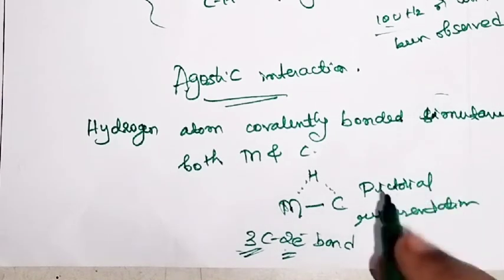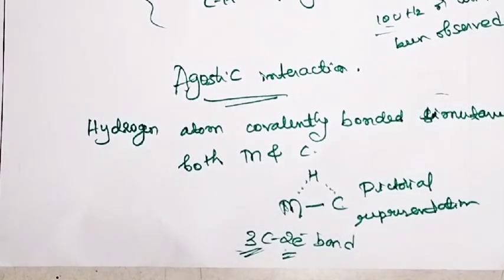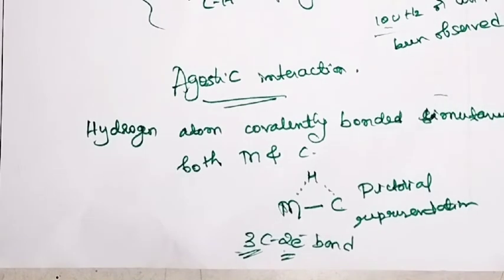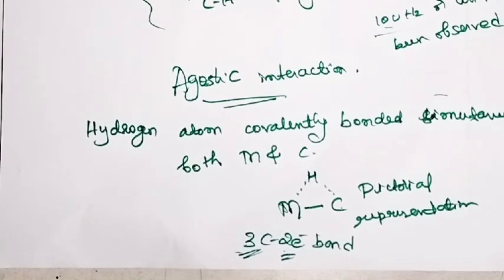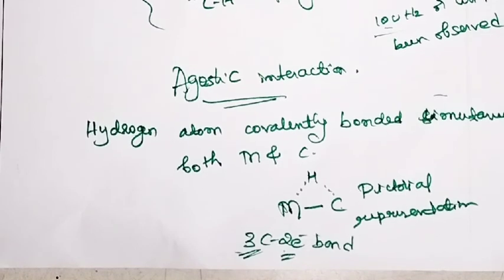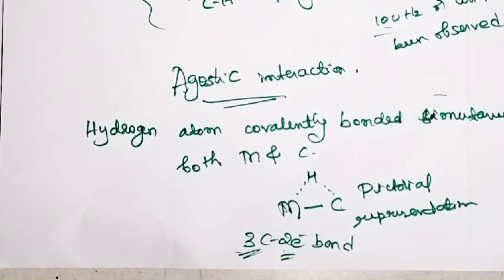In the Fischer carbene, this agostic interaction does not come into picture because Fischer carbene has an 18-electron configuration — that is, it is saturated. So there is no agostic interaction observed in Fischer carbene; it is only observed in Schrock carbene. This is all about agostic interaction. If you have any doubt, please let me know. Thank you.